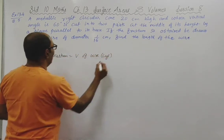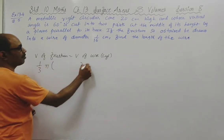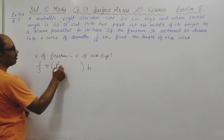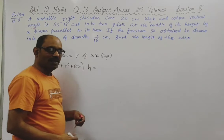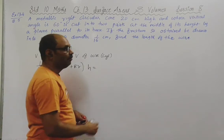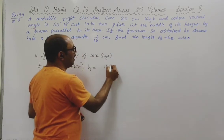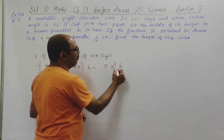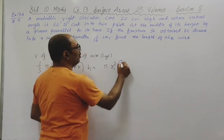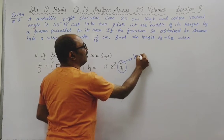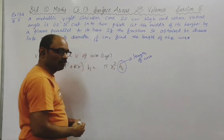Volume of frustum of cone formula is one-third pi times h times (R squared plus r squared plus R times r). Volume of wire, which is actually a cylinder, is pi R1 squared times H1, where H1 is the length of the wire - that is what we are supposed to find.